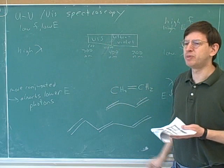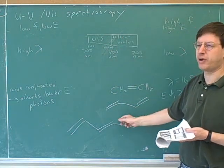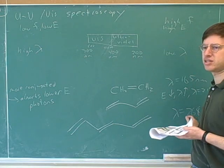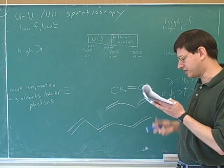But if the compound absorbs visible light, that means that it's really conjugated. Because this is already quite conjugated, but it's still not that close to the visible light. So if we're absorbing visible light, we must be getting a very conjugated system.